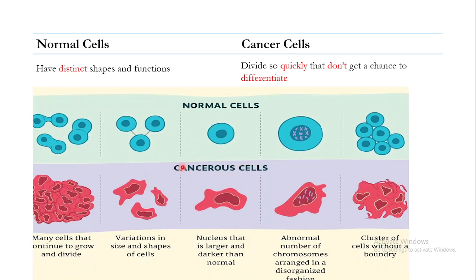This chart shows the major differences in the shapes and functions of normal cells versus cancer cells. Normal cells divide in a very regulated manner, but many cancer cells continue to grow and divide without differentiation and without assuming any proper shape or function. The variations in shape and size between normal and cancer cells are very obvious in these images.